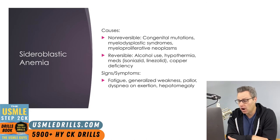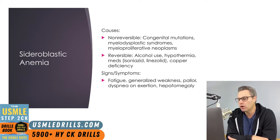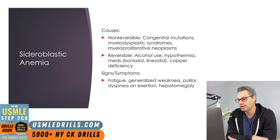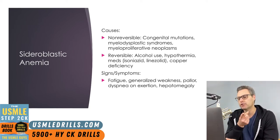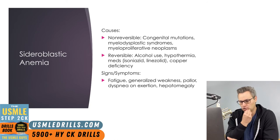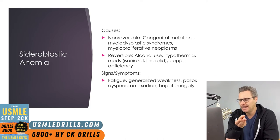Let's move on to more rare causes of microcytic anemia, starting with sideroblastic anemia. This anemia is named for the ring sideroblasts seen on stained bone marrow biopsy smear — developing red blood cells with pathologic iron deposits in the mitochondria surrounding the nucleus, giving a ring-like appearance. Sideroblasts form due to dysfunction in proteins involved in heme synthesis or mitochondrial function. Causes include non-reversible causes like congenital mutations, myelodysplastic syndromes, or myeloproliferative neoplasms, and reversible causes like alcohol use, hypothermia, medications such as isoniazid or linezolid, and copper deficiency.